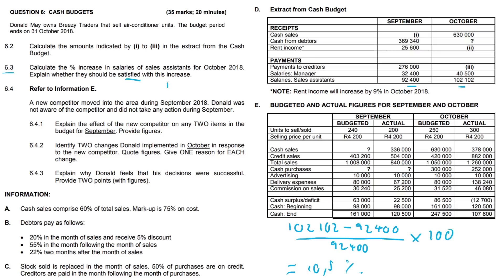Explain whether they should be satisfied with this increase. A 10.5% salary increase is above the rate of inflation, so it's a fair increase. However, if you compare it to the manager's increase — from 32,000 to 40,000, which is about 25% — the sales assistants could be dissatisfied. Whatever your reason, make sure you substantiate and elaborate on it properly.